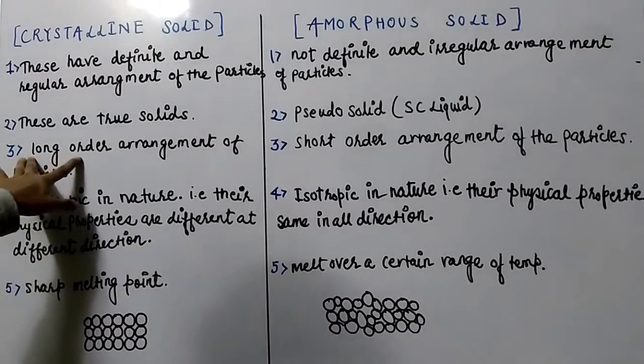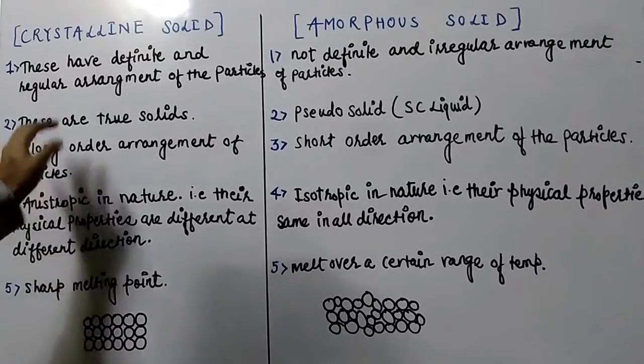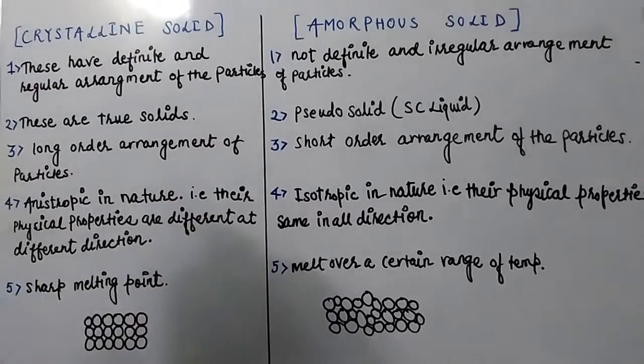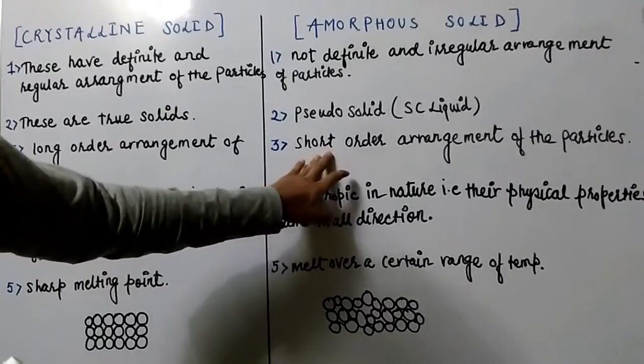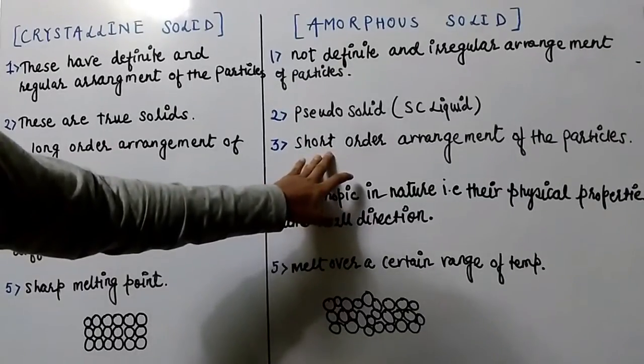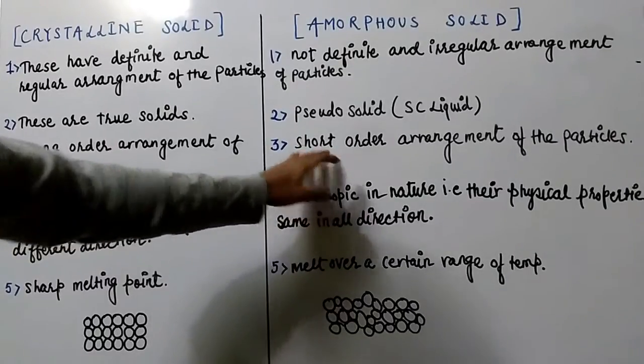Next property: crystalline solids have long range order of particles, whereas amorphous solids have only short range order of particles.